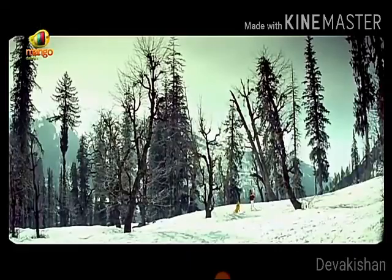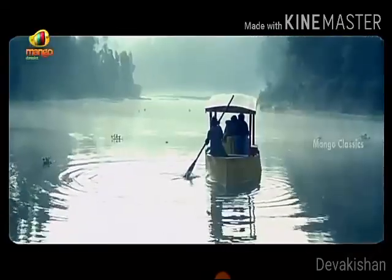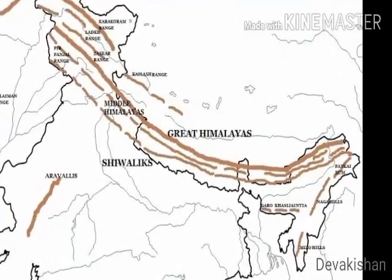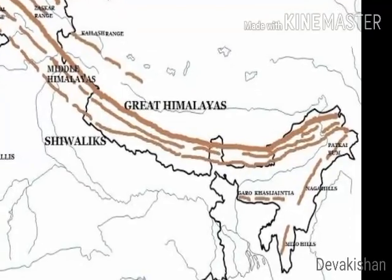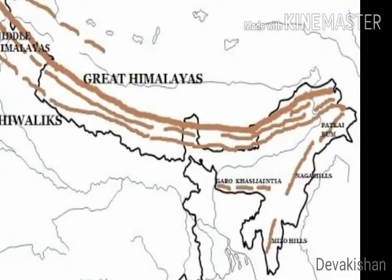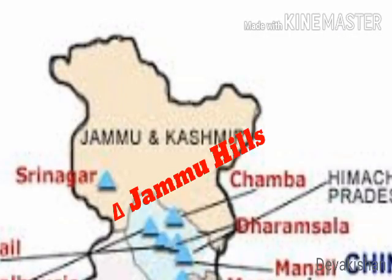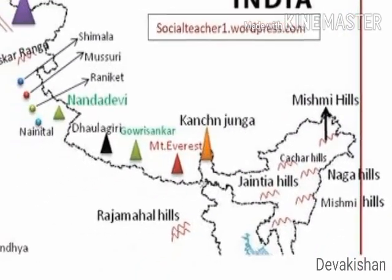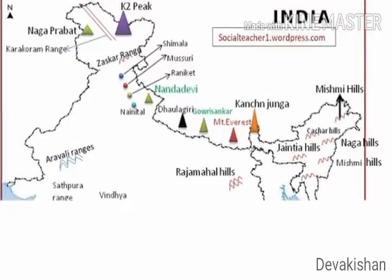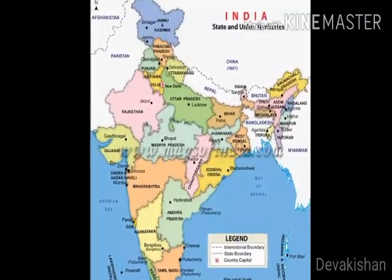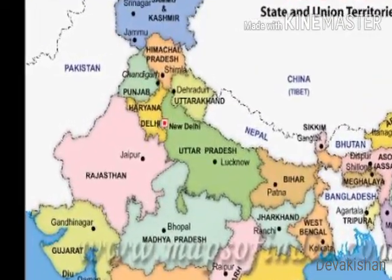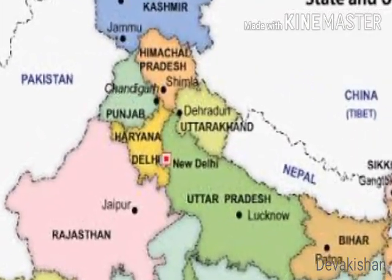The Lower Himalayas, or Shivaliks, are the southernmost range of the Himalayas. They extend over a width of 10 to 50 km with altitude varying between 900 m to 1,100 m. These ranges are called by different names in different regions: Jommu Hills in Jammu region, Mishmi Hills in Arunachal Pradesh, and Kachur in Assam. These parts consist of thick gravel and alluvium. The valleys lying between the Lesser Himalayas and Shivalik ranges are called Duns — for example, Dehradun, Kotli Dun, and Patli Dun.